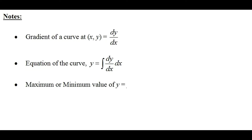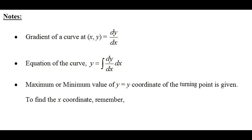The third point: if you're given the maximum or minimum value of y, that means you've been given the y-coordinate of the turning point. You don't only need the y-coordinate — you also need the x-coordinate. To work out the x-coordinate of the turning point, remember the important property: for any turning point, the gradient of the tangent equals zero, so dy over dx at the turning point is zero. We need both coordinates to work out the integration constant c.